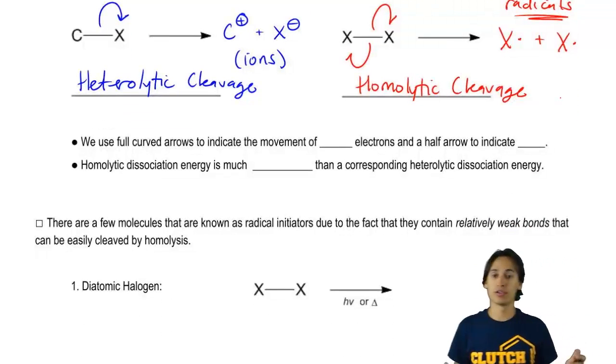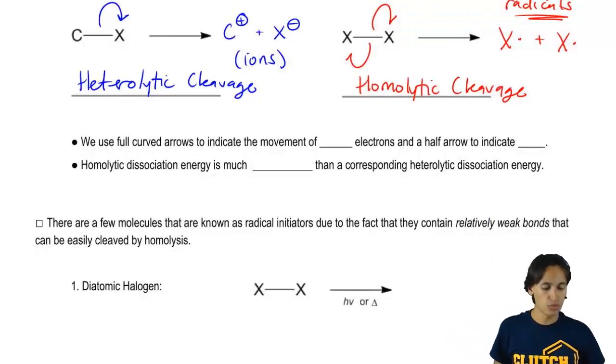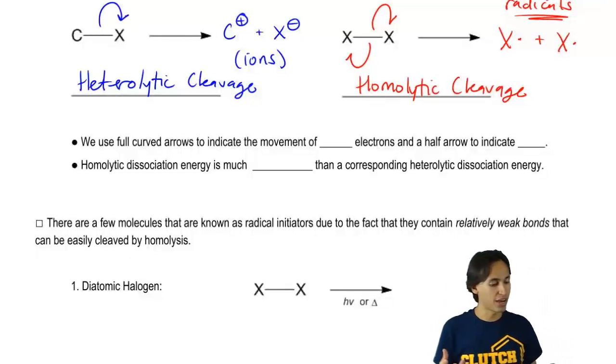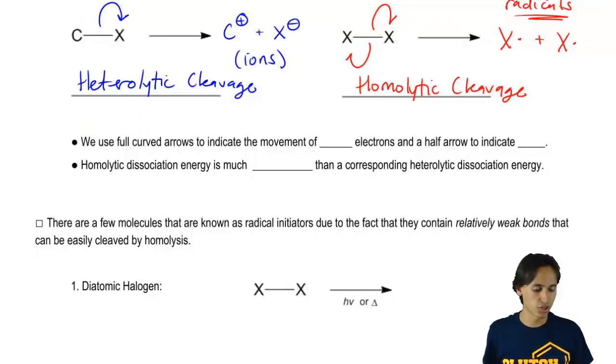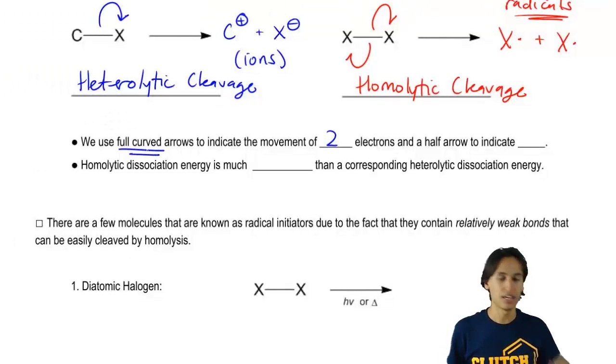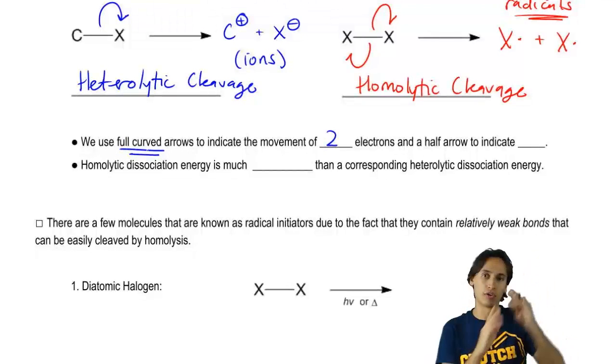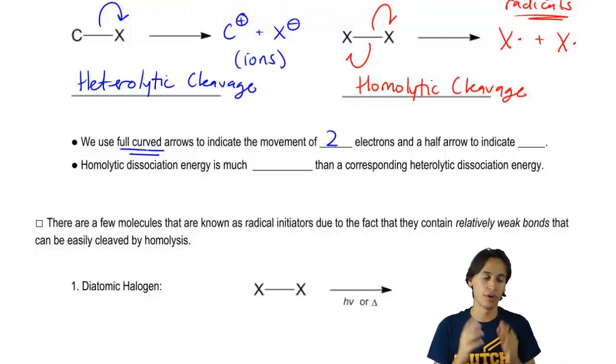Basically I want to show you guys the difference between the arrows that I just drew. When we want to draw that two electrons are moving to an atom, we say that full curved arrows are used to indicate the movement of two electrons. That means it's a full headed arrow. It has both sides of that arrowhead.